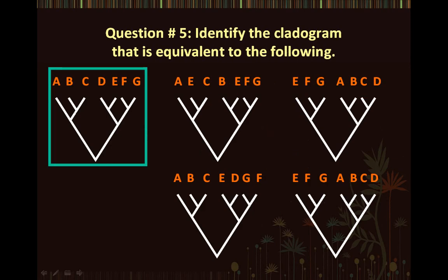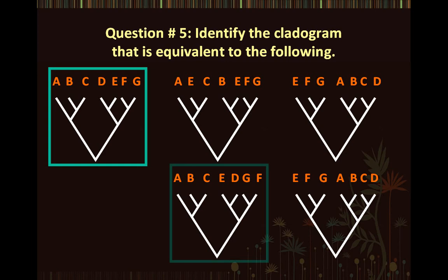Question number five: Identify the cladogram which is equivalent to the one shown in the box. Make sure to look at all the letters and note when branches are switched and when the actual branching relationships remain the same. The correct answer is the one in the box. All the other answers are incorrect because the branches are switched in ways so that the inherent branching relationships are changed. In this cladogram, although we have switched the positions of D and E as well as F and G, the branching relationships have not changed. Think about the example with the brother, sister, and cousin. The two phylogenetic trees in the boxes are equal.